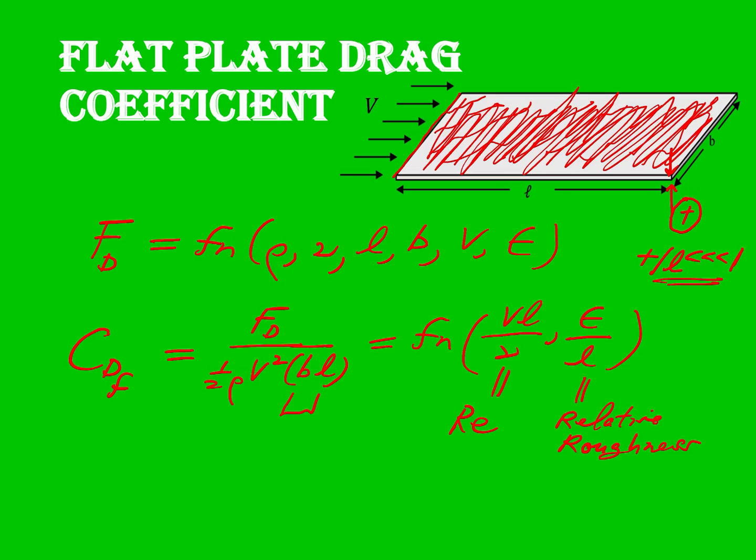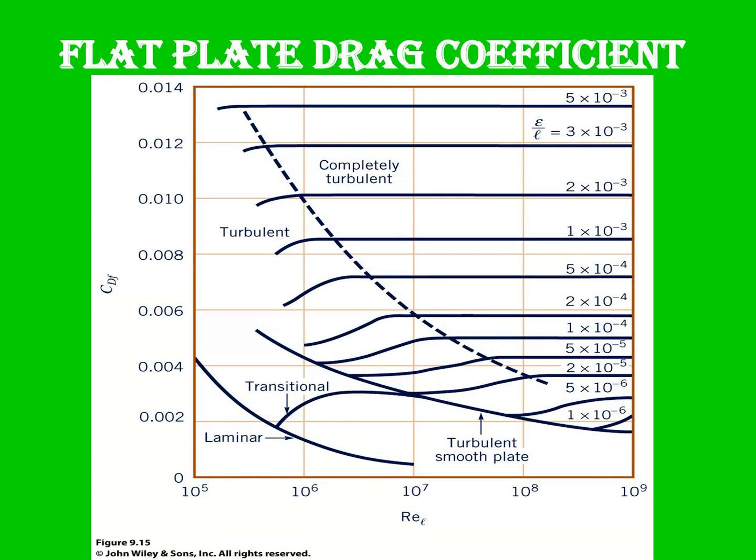So as Megan's saying, I'm bringing Moody back. I think she said Moody, right? Looks a lot like the Moody diagram here. So this is that functional dependence that we just described. It is the drag coefficient as a function of the Reynolds number and the relative roughness, epsilon over L, just what I told you. And it is very analogous to the Moody diagram, and it looks very similar, and the physics are pretty similar as well.